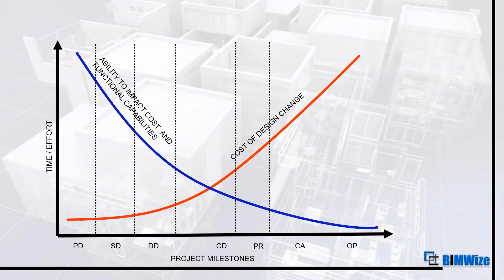Right at the start of the project, the cost of making design changes is much, much lesser at the pre-design or schematic design stage. But as we move forward in the project, this cost spikes really high, especially towards the end of the construction document stage.